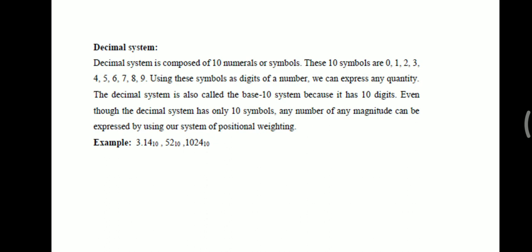Some examples are given for these different number systems. The decimal number system is composed of 10 numerals or symbols — 'decimal' itself implies 10. These 10 symbols are 0, 1, 2, 3, 4, 5, 6, 7, 8, and 9. Using these symbols as digits of a number, we can express any quantity. The decimal system is also called the base-10 system.